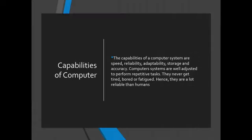Moving to the next slide, we have the capabilities of the computer. The capabilities of a computer system are: speed — the computer is very speedy; reliability — it is reliable; adaptability — it can adapt to circumstances; and storage — we can store data and retrieve it. Accuracy is also a most important capability of the computer.